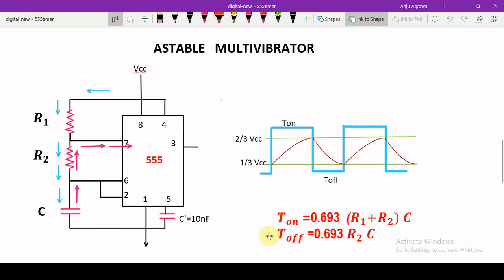The on time and off time depends upon the external components R1, R2, and C, and this is how the on time and off time depends mathematically.